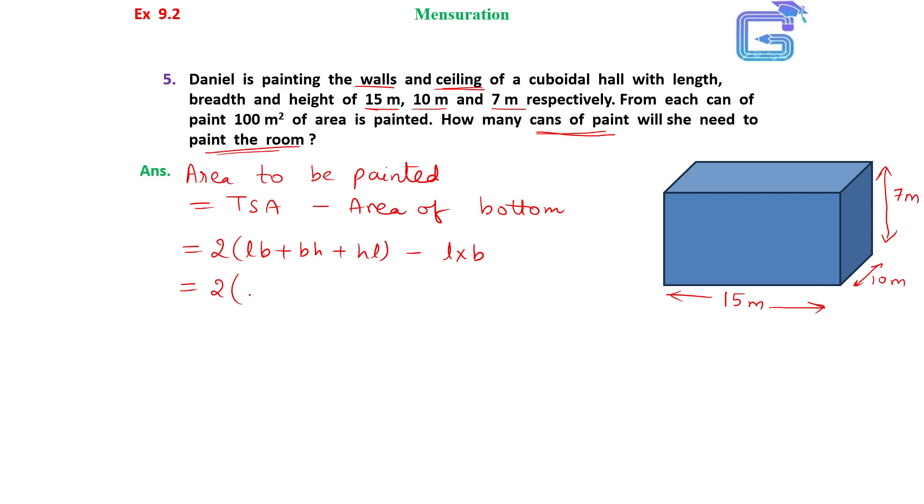So, L is 15, breadth is 10, height is 7, plus height is 7, length is 15, minus L into B, L is 15 and B is 10.